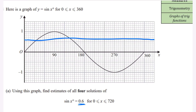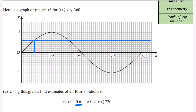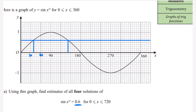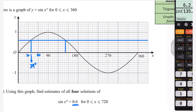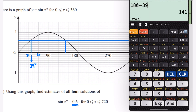We're going to read off the values where the graph meets the 0.6 line. Looking at the scale, 90 degrees is marked and the grid goes up in 30s — so 30, 60, and so on. Each square represents 6 degrees (30 divided by 5 squares). The first intersection is at approximately 39 degrees. The second value uses symmetry: 180 minus 39 gives us 141 degrees.